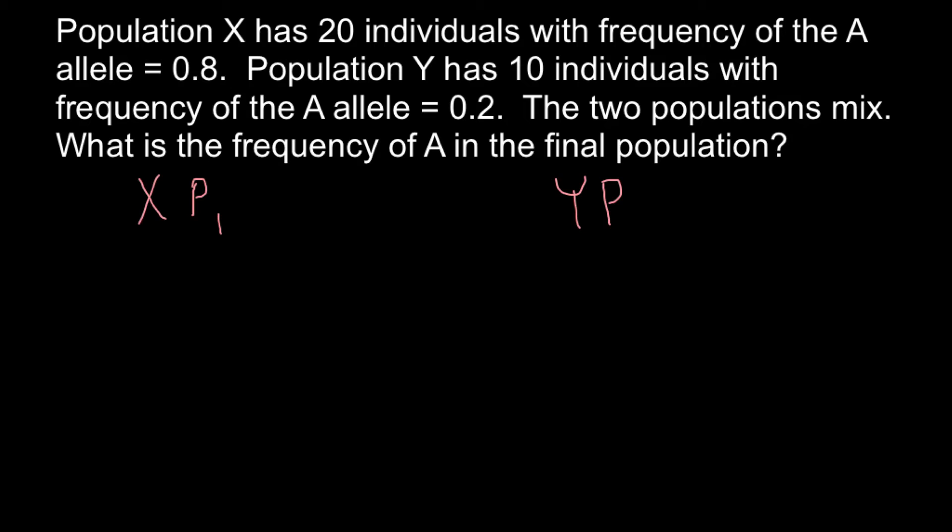So in the population X, we have 20 individuals. And in population 2, we have 10 individuals.